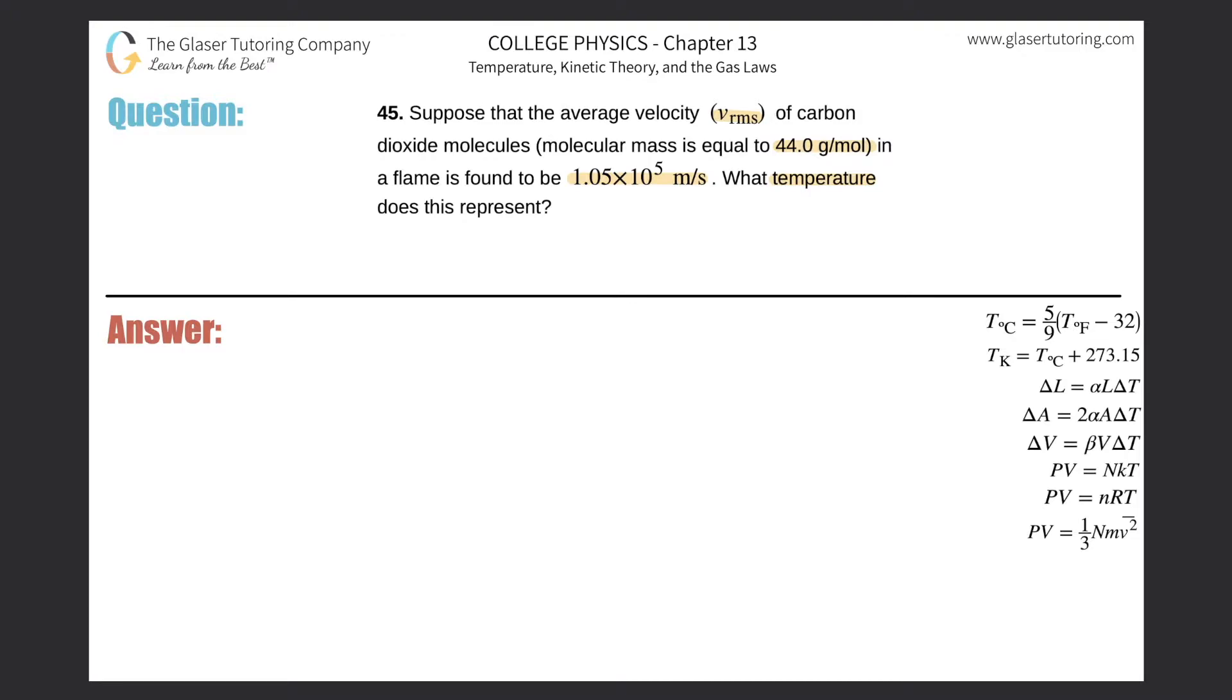We have one formula that looks just like this: v_rms equals the square root of three times the Boltzmann constant times the temperature, all divided by the mass of a molecule or atom, depending upon what we are talking about.